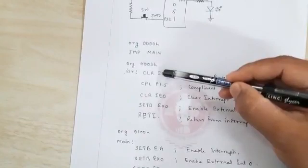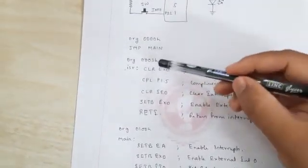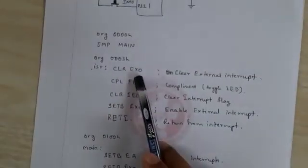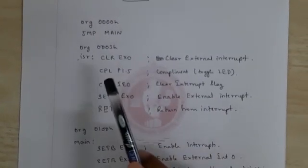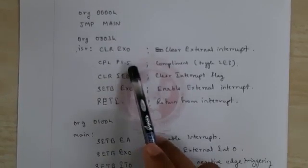The interrupt service routine is at address 0003h for INT0. Here we clear the external interrupts so there would not be any further interrupts. Then we complement P1.5 where the LED is connected—if the LED is on, it becomes off; if it's off, it becomes on.